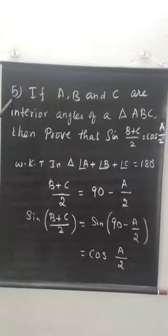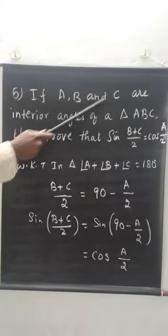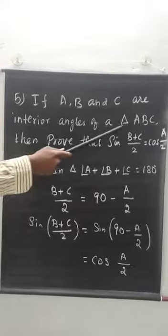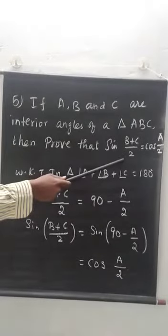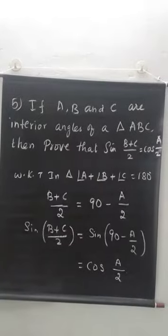The next question: if A, B and C are interior angles of triangle ABC, then prove that sin((B+C)/2) = cos(A/2).